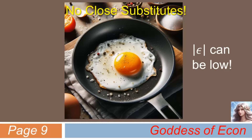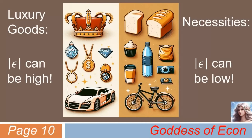Another contrasting example is luxury goods versus necessities. Common sense tells us that since necessities need to be consumed by many people in everyday life, they have relatively low price elasticity of demand — in absolute value. On the other hand, luxury goods' quantity demanded is likely to be more price elastic, as many people wouldn't think of them as very necessary in everyday life. So the price elasticity of demand for luxuries is likely to be higher than that of necessities, again in absolute value.